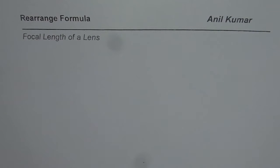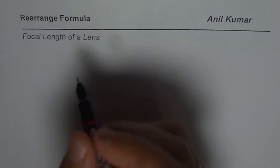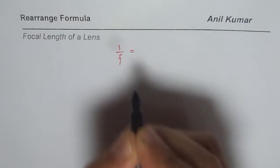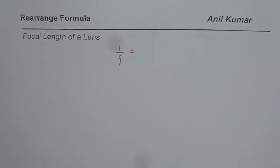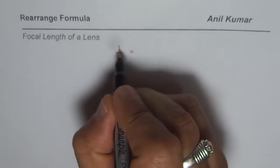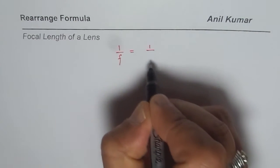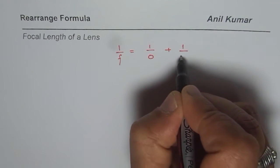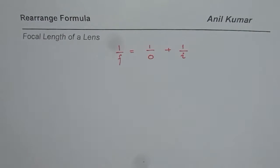I'm Anil Kumar and in this series on understanding how to rearrange formulas, we'll take up focal length of a lens in this particular video. The focal length is related to the distance of the object and its image by the formula 1 over f equals 1 over object distance plus 1 over image distance.